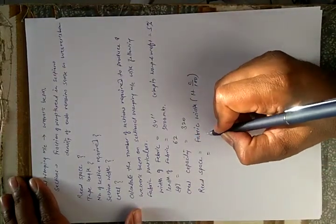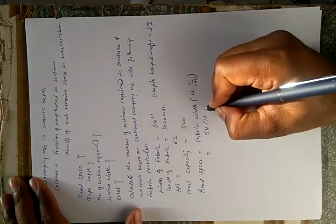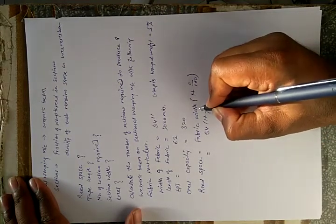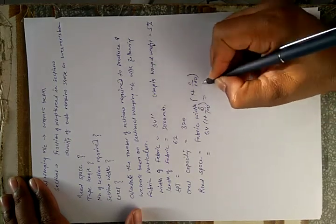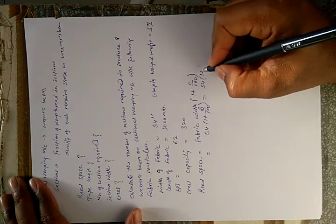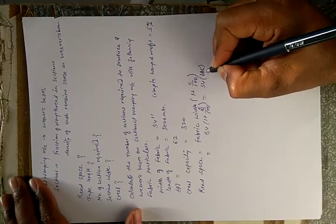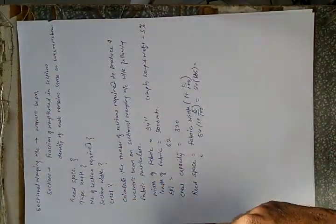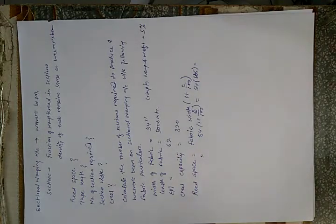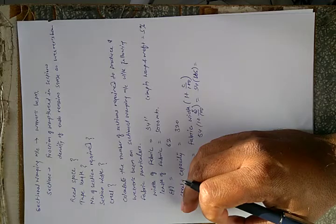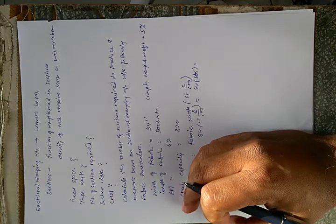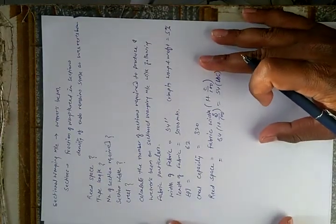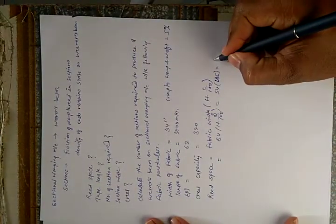Here the fabric width is 54 inches and crimp is 5%. So read space = 54 × 1.05, which equals 56.7 inches.